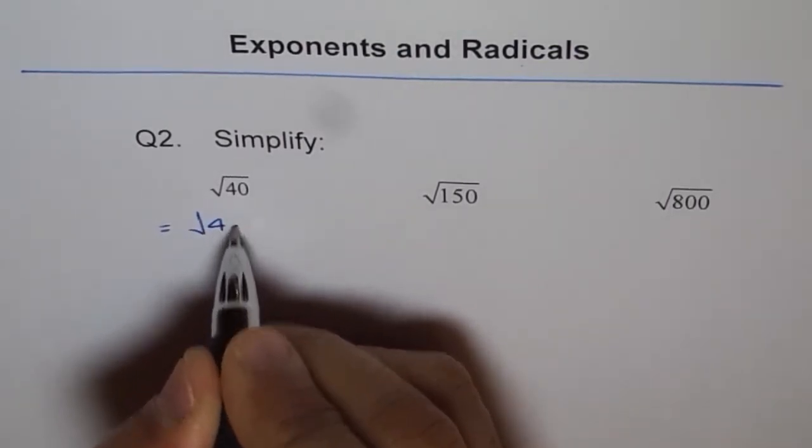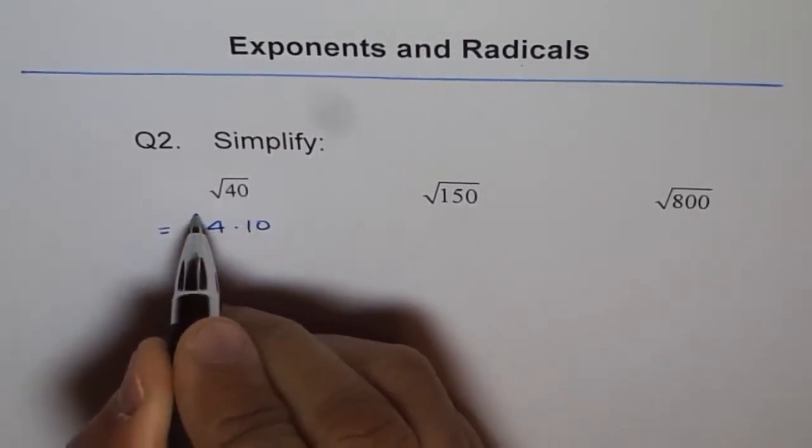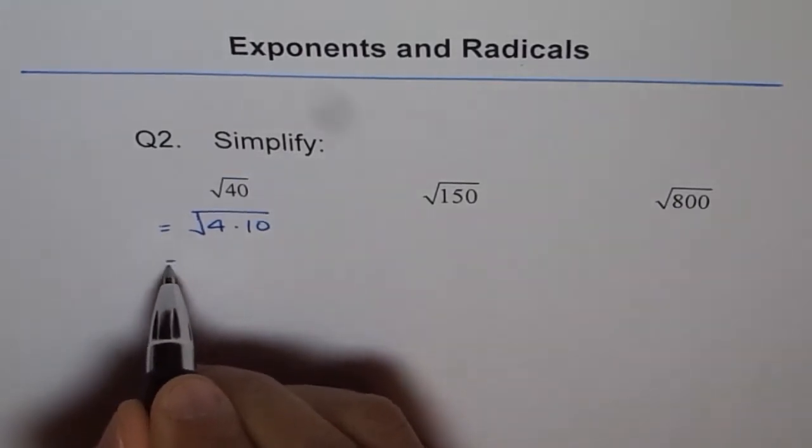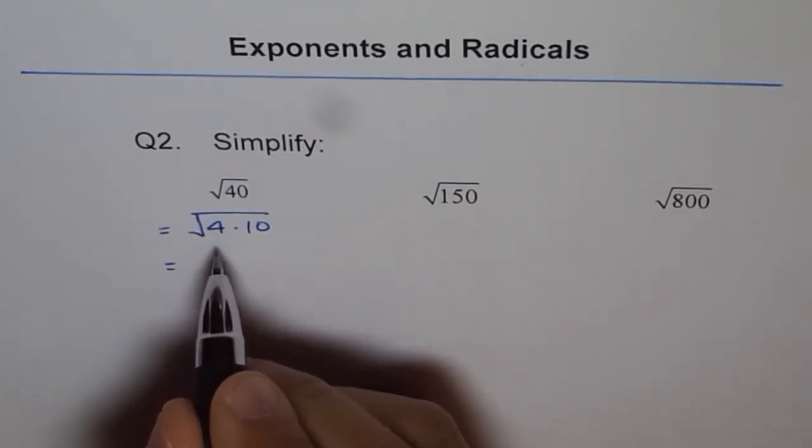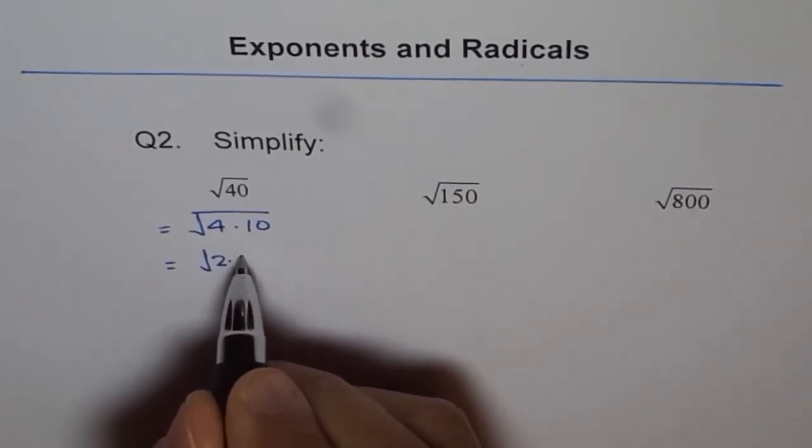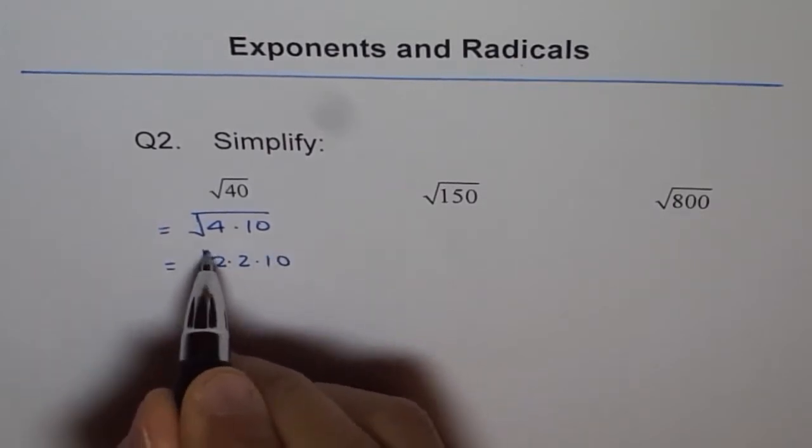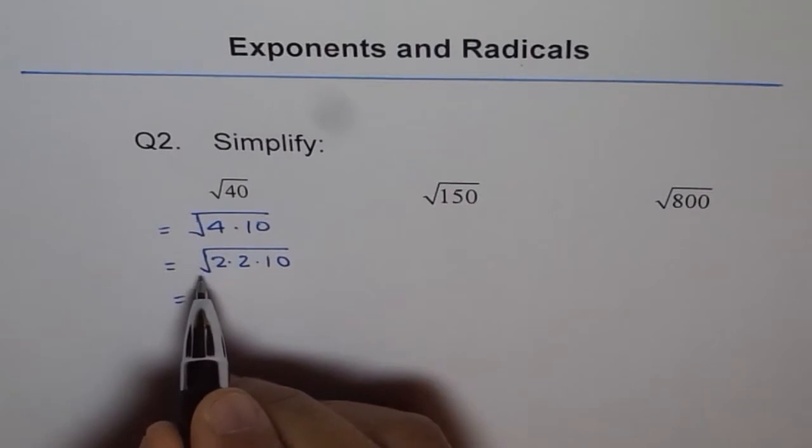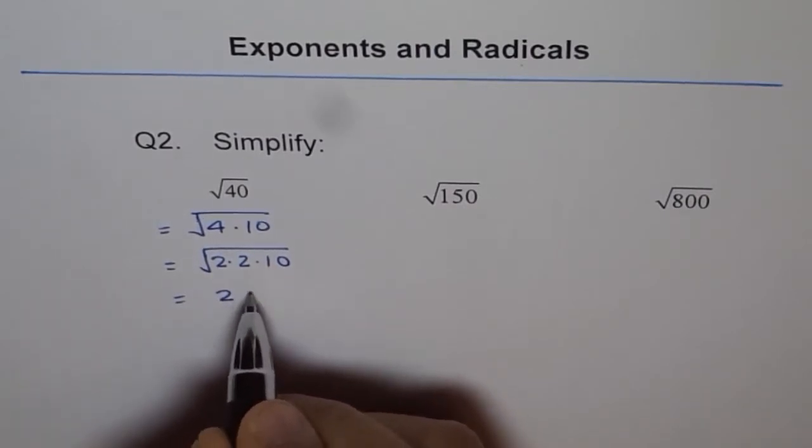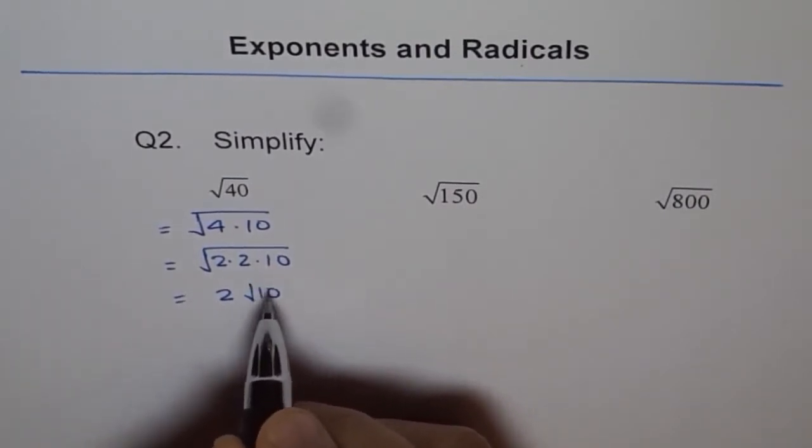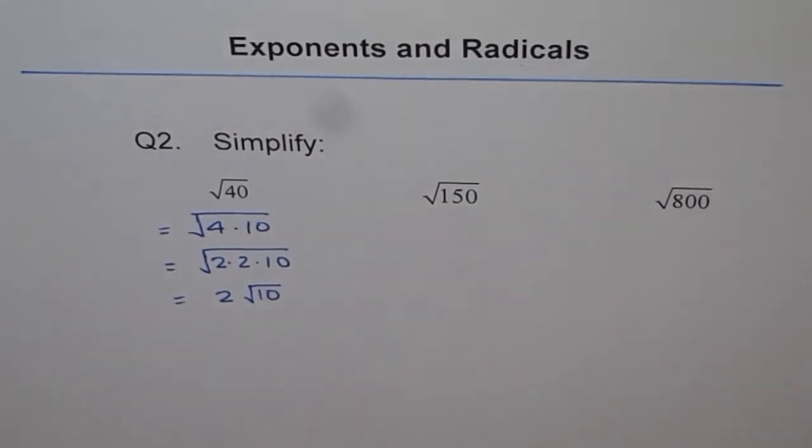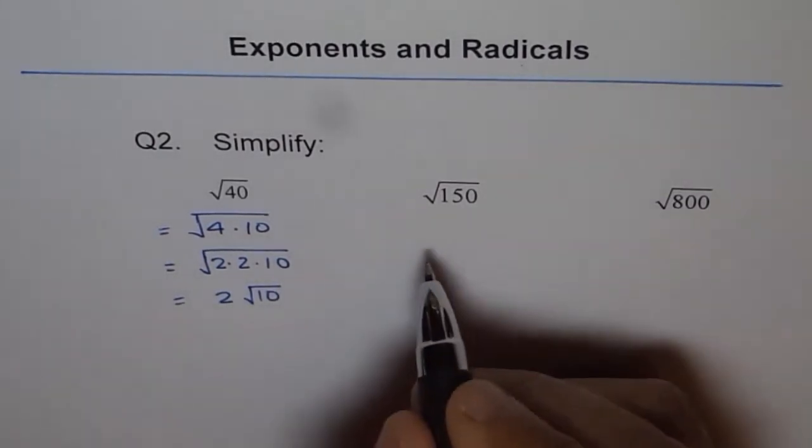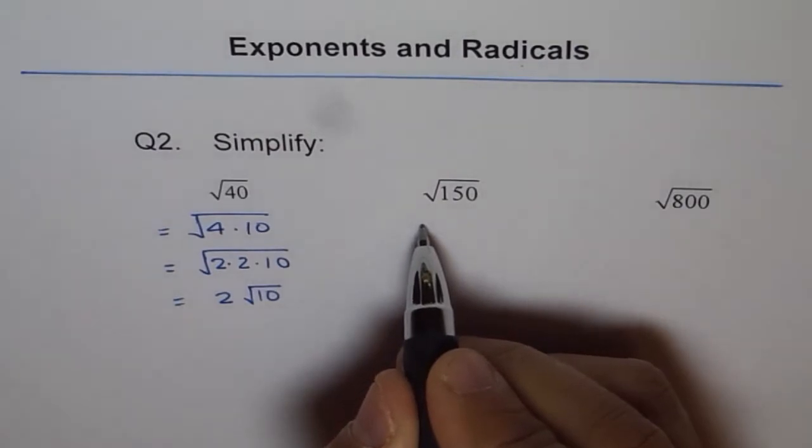Let me go one more step: 2 times 2 times 10. One of the 2s can be taken out, giving me 2 times the square root of 10.